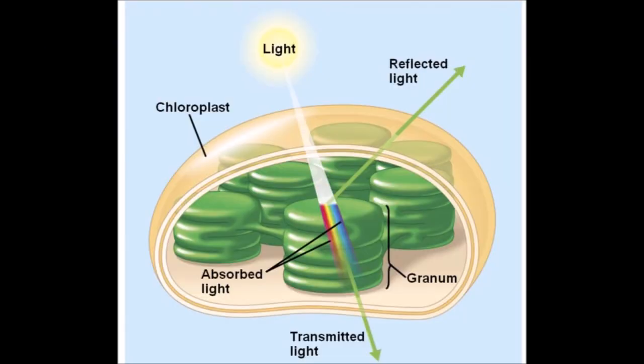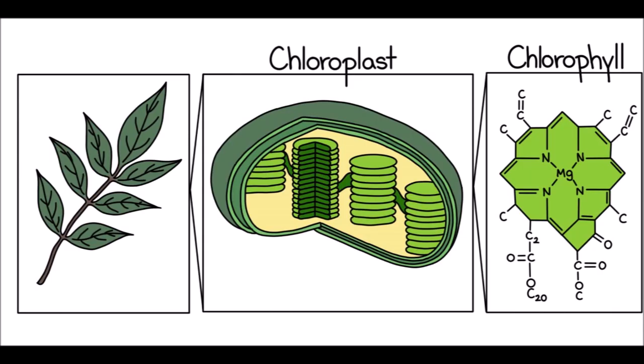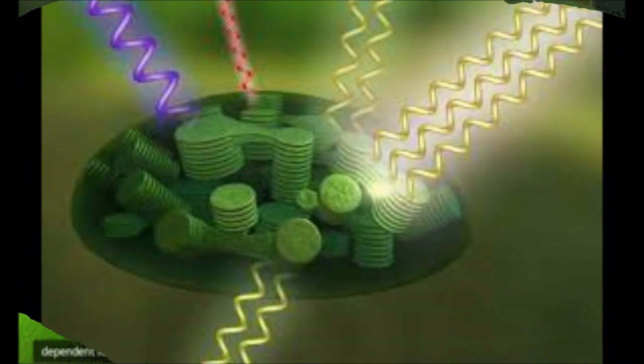The next important component required by plants for preparing food is chlorophyll. Chlorophyll is also called the green pigment. It is present in the chloroplast. Chlorophyll is responsible for making plants green in colour. Chlorophyll is a photoreceptor which absorbs light energy from sunlight and provides this energy to the plant for preparing food. Hence, it acts as a catalyst for preparing food in plants.